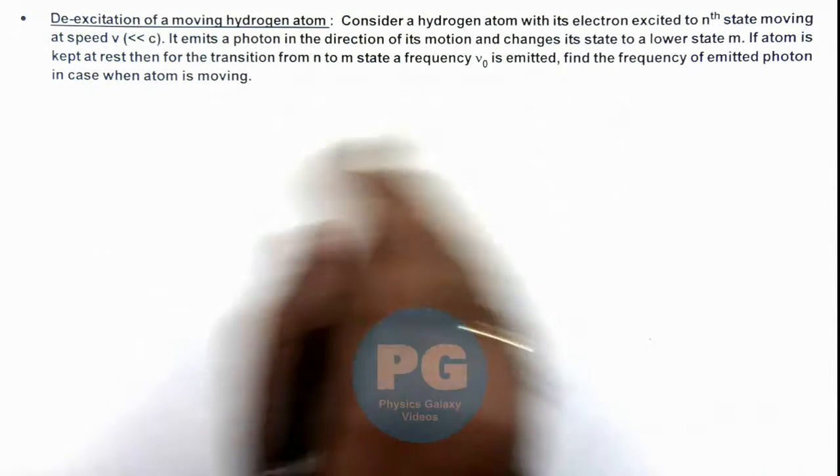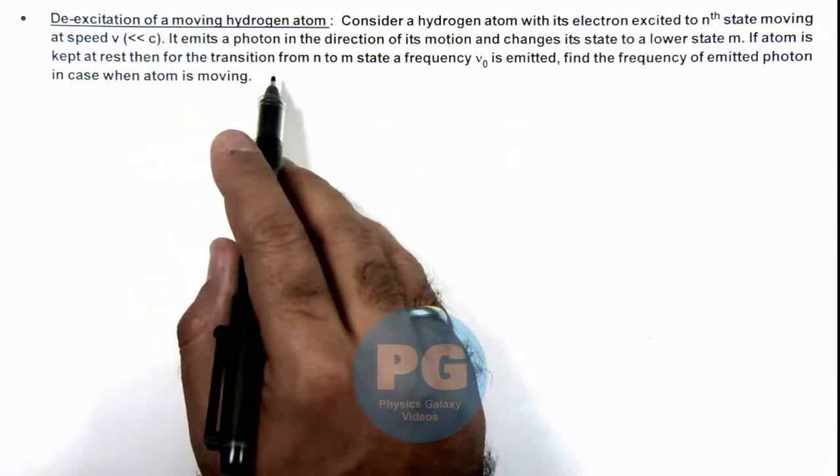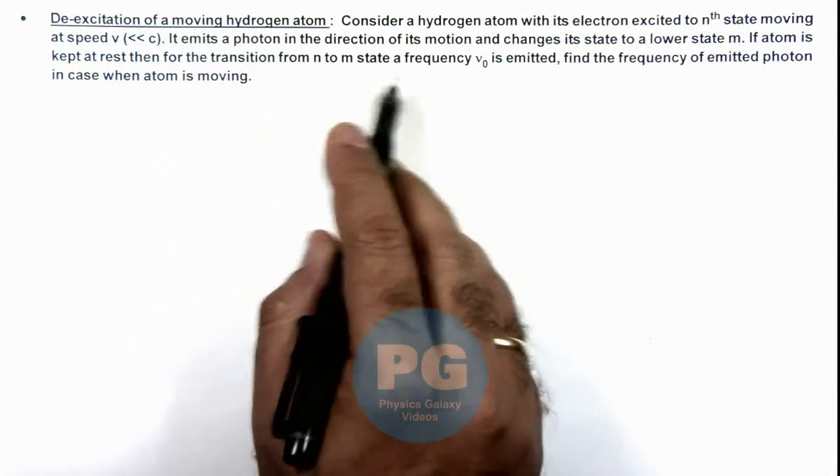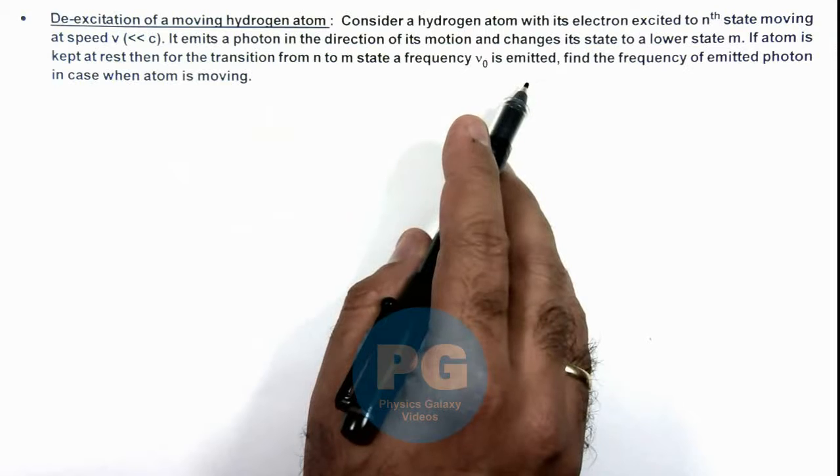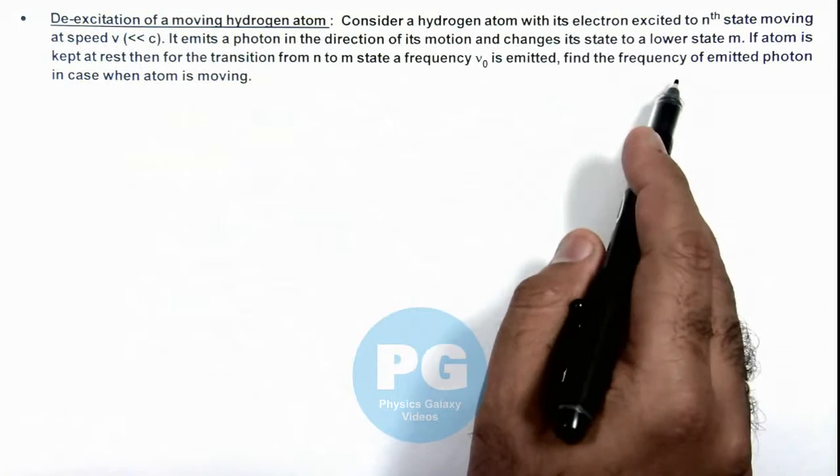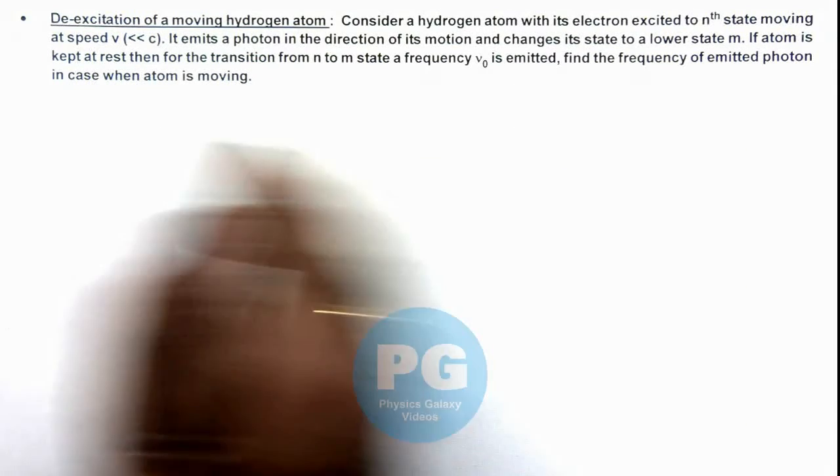It emits a photon in the direction of its motion and changes its state to a lower state m. Now it is saying if atom is kept at rest then for the transition from n to m state a frequency nu_0 is emitted, and we are required to find the frequency of emitted photon when the atom is moving.